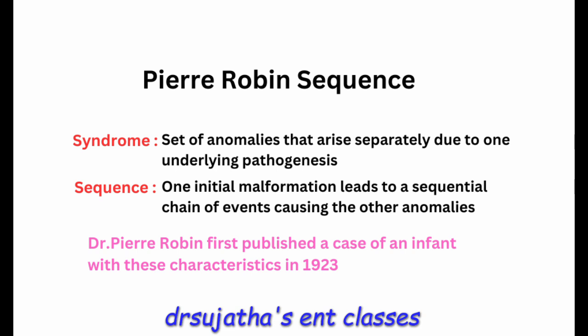Micrognathia means mandibular hypoplasia. Glossoptosis is downward displacement of the tongue and upper airway obstruction. It was Dr. Pierre Robin who first published a case in 1923.